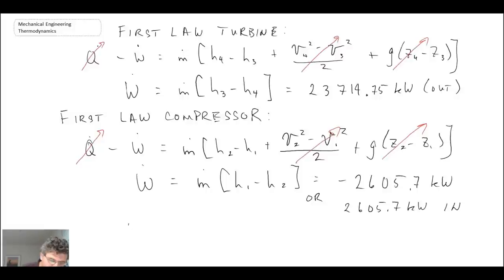The network on the turbine is going to equal the work out of the turbine minus the work we have to put into the compressor. With that, we end up with this value. That is the answer to the first part of the problem.